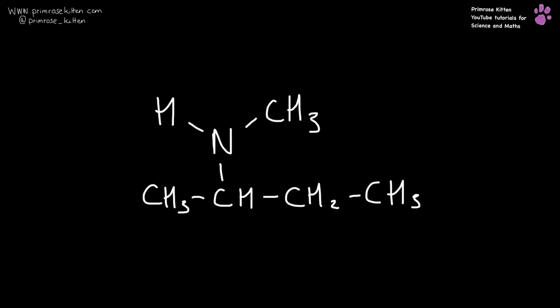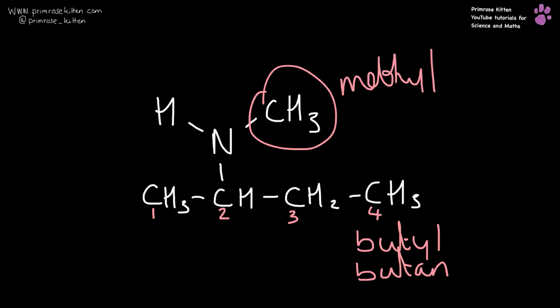Last one here, a bit more complicated. We have a long carbon chain, 1, 2, 3, 4. So this is going to be a butyl or a butan. Here we have a methyl. So this is going to be N to indicate it is a secondary.